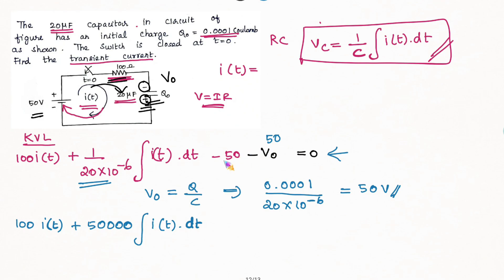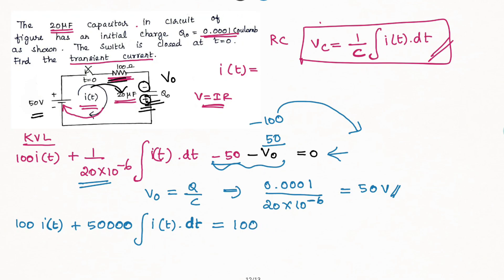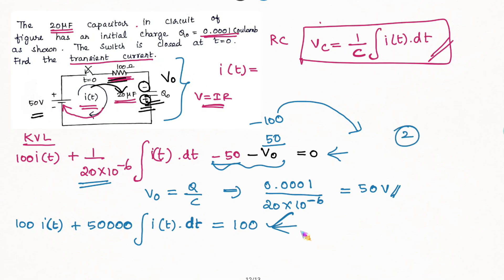We now have 100 into I of T, plus 1 divided by 20 into 10 to the power minus 6, multiplied by the integral of I of T dt, minus 50, minus 50, giving us minus 100. This minus 100 equals plus 100 on the right side. So the equation is equal to plus 100. The next step, the second step, is to apply the Laplace Transform.